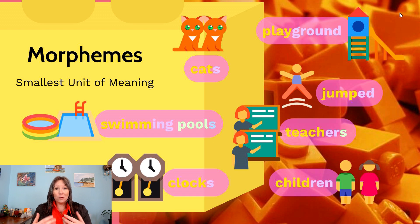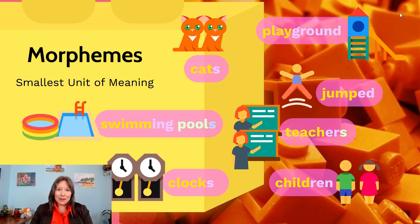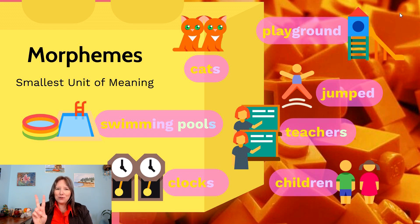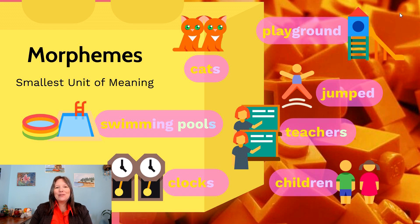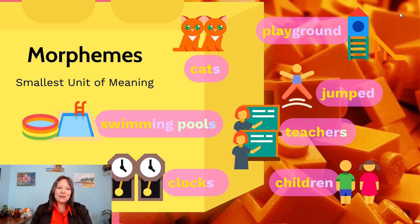Sometimes a word can have multiple morphemes even without past tense or plural markers. 'Playground' is a compound noun with two morphemes — it's the ground at which we play. Similarly, 'textbook' is a book with text — two morphemes. 'Classroom' is a room in which class happens — also two morphemes. But 'mushroom' only has one morpheme, because breaking it into 'mush' and 'room' would change the meaning — it's not a room of mush.